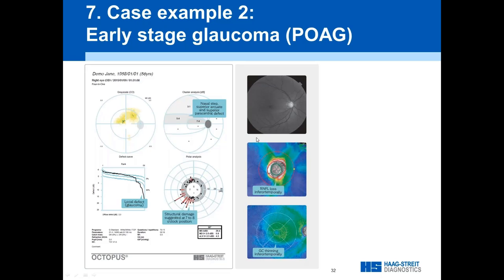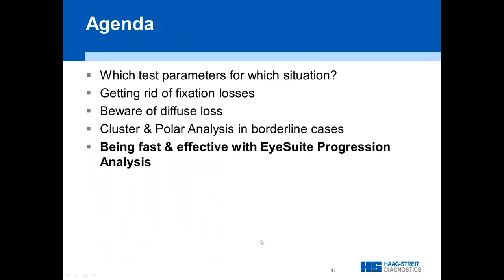Here are practical examples. You can see how this looks like a paracentral defect or early glaucoma. The cluster analysis clearly shows this is abnormal. The polar analysis shows that we have to look at the inferotemporal side for the defect, and we do find that confirmed in the OCT as well. So that gives us the confirmation.